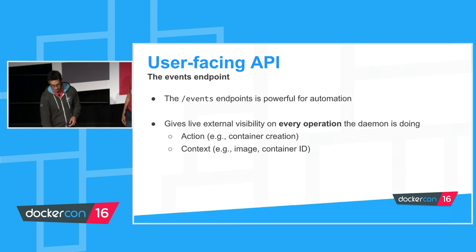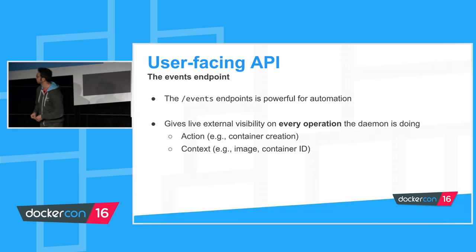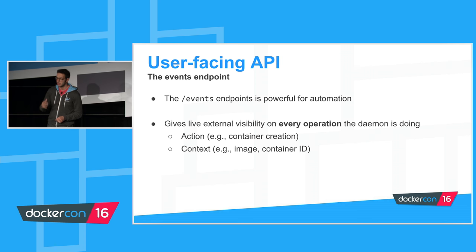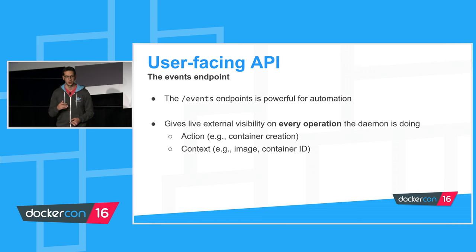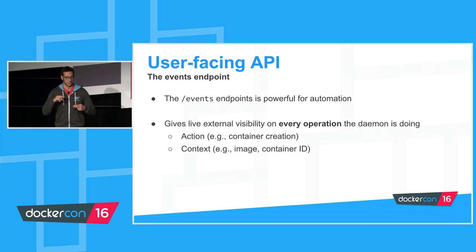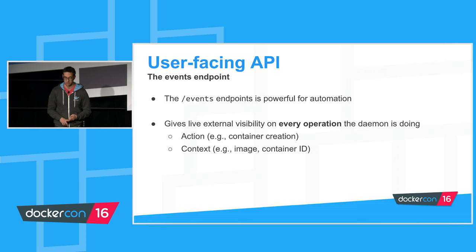So how can you use this to extend the engine? I'm going to focus on what is probably the most important API endpoint for extension capabilities: the events endpoint. The events endpoint gives you live external visibility on every action the daemon is doing — things like container creation, pulling an image, attaching a network, creating a network. They get notified live with context information, such as the container ID in the case of a container creation event.